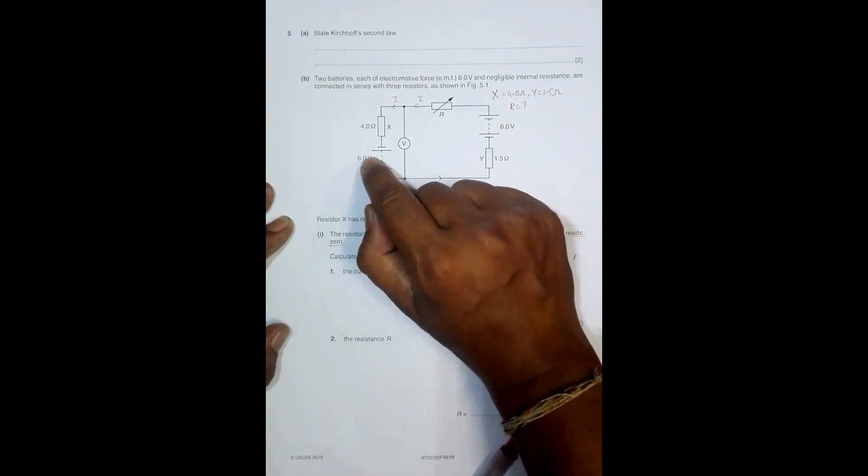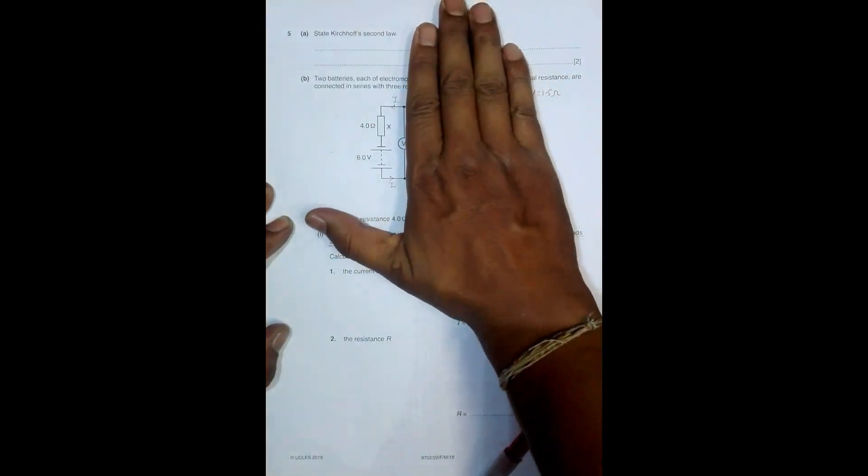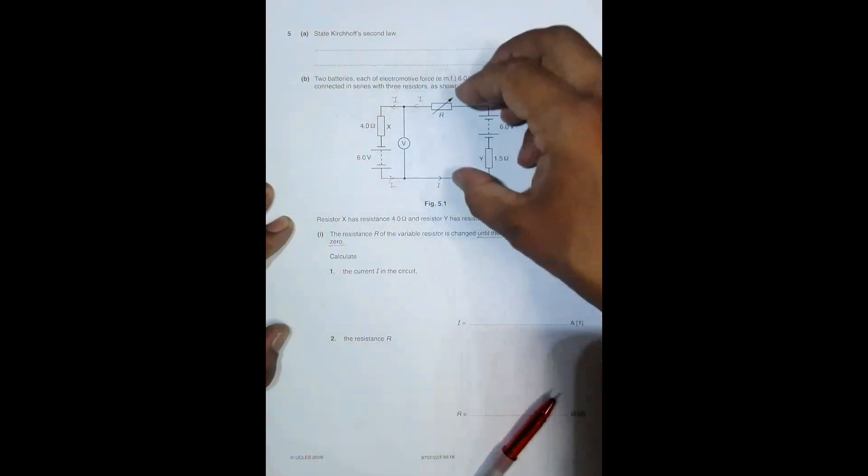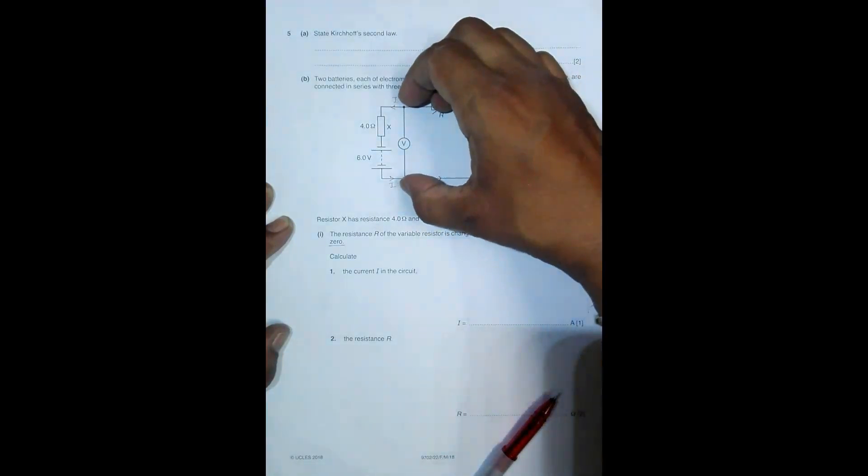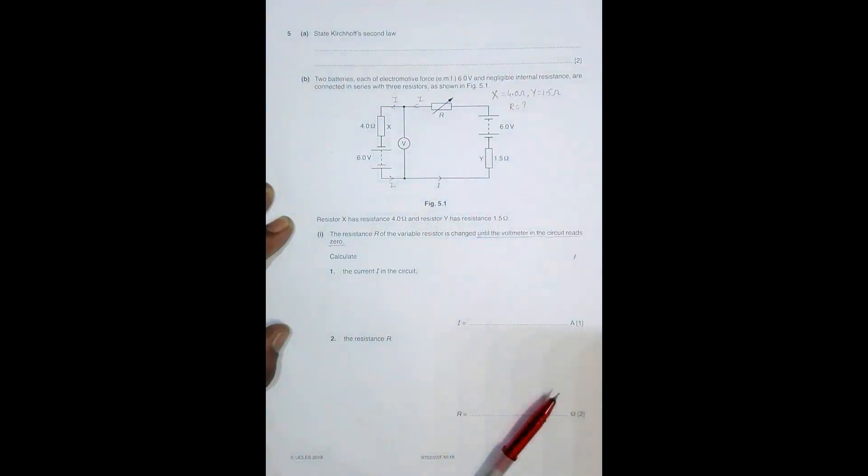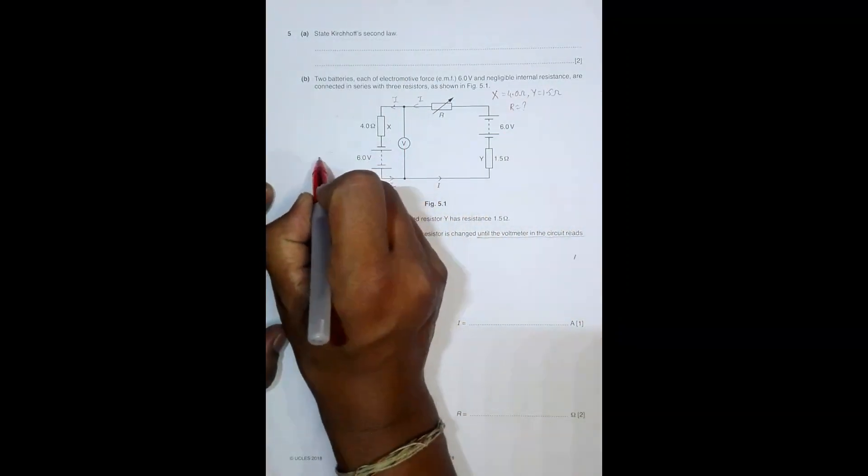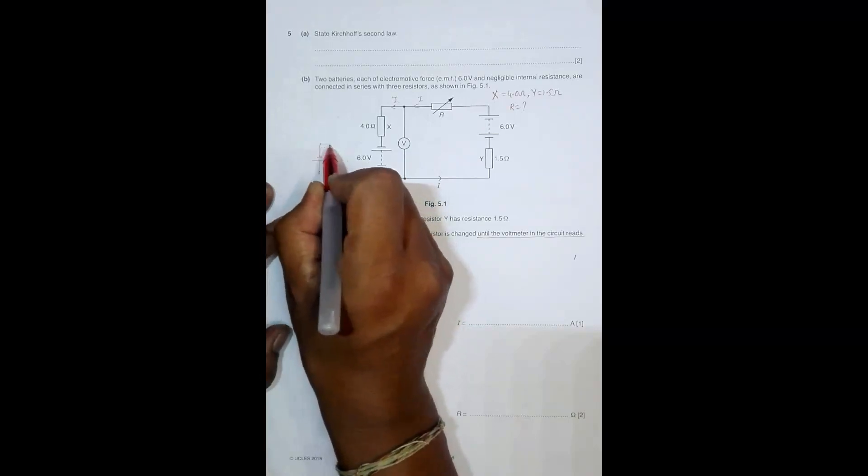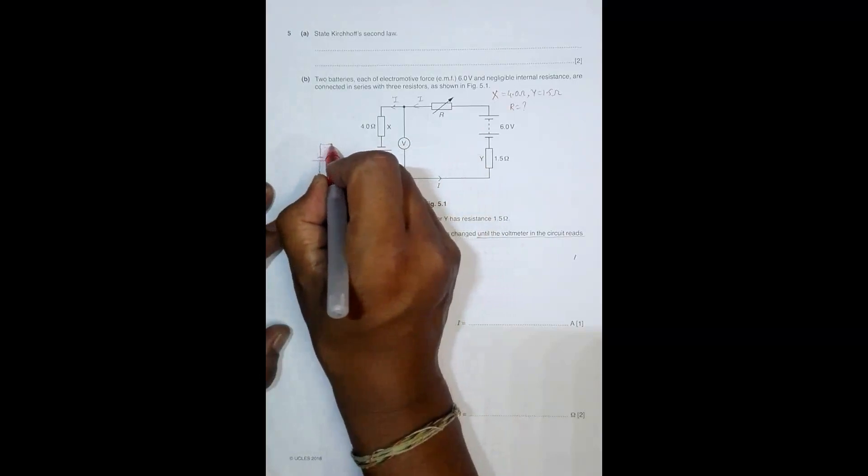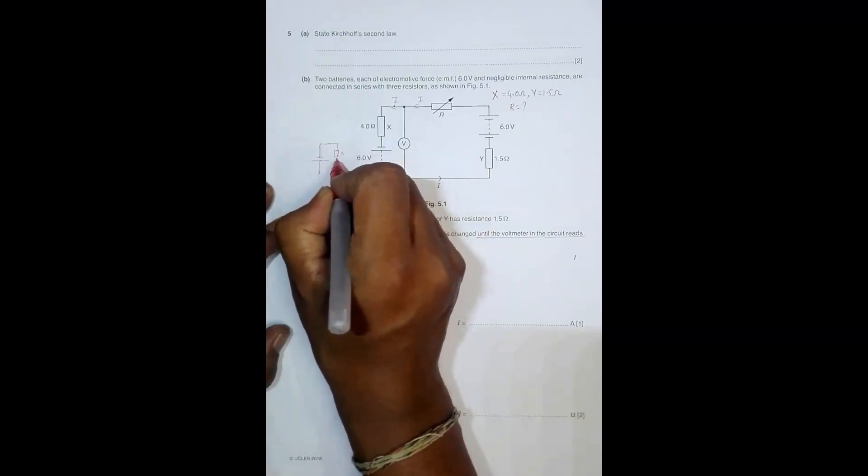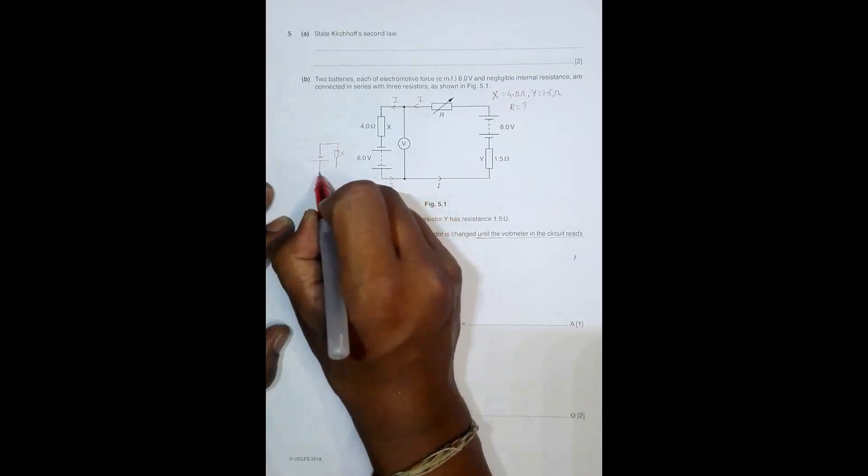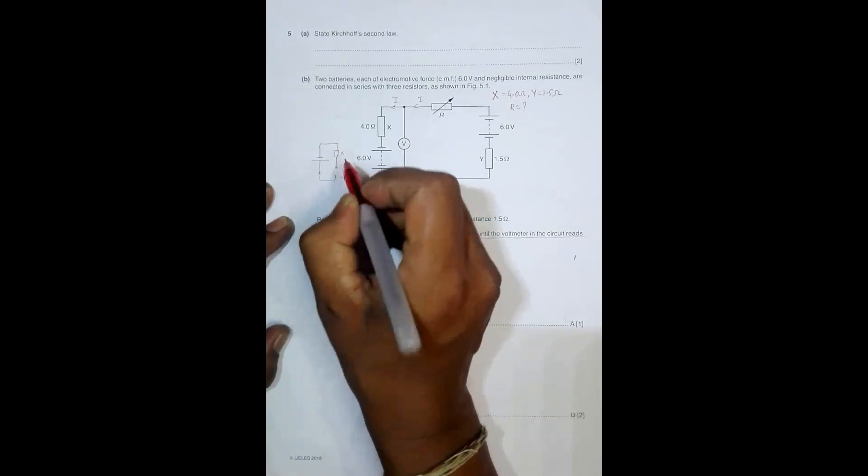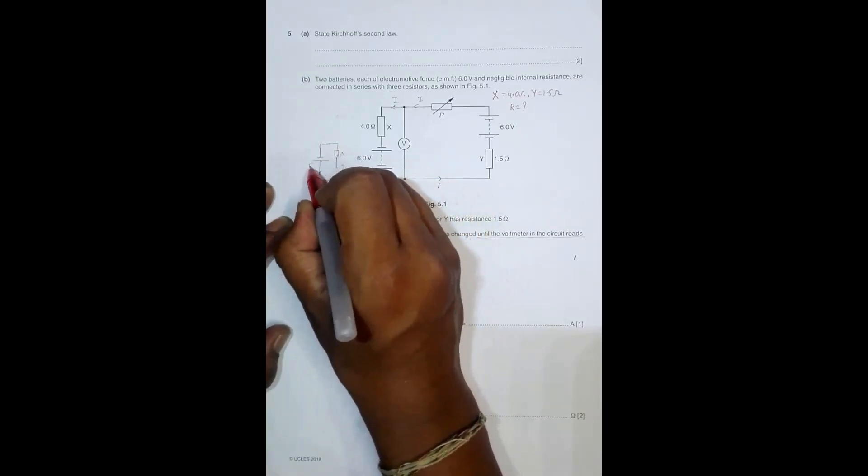We have a cell here, we have resistor X here, and we have something where the PD is zero. I can group this as an item where the PD equals zero. So this circuit will resemble: we have the cell, we have some sort of resistor X, and something here through which the PD is equal to zero.